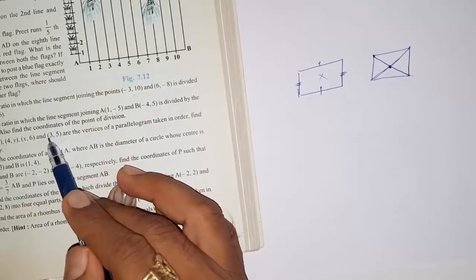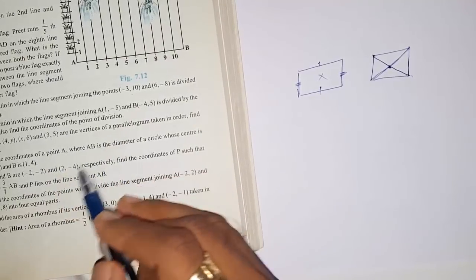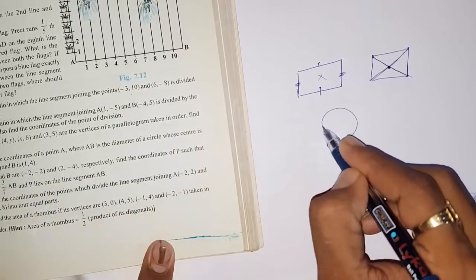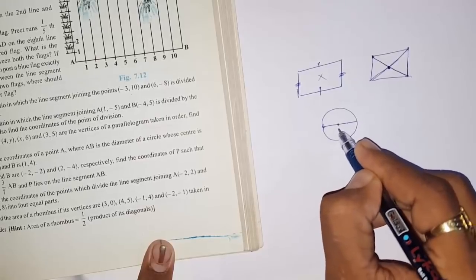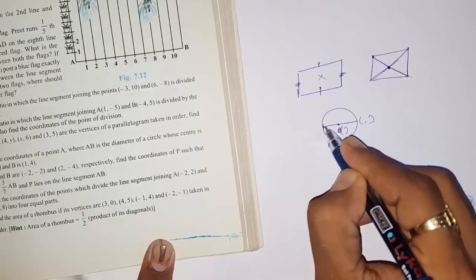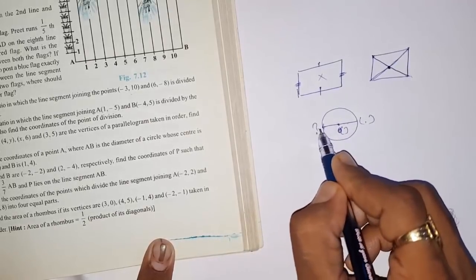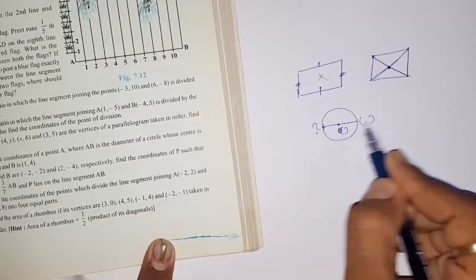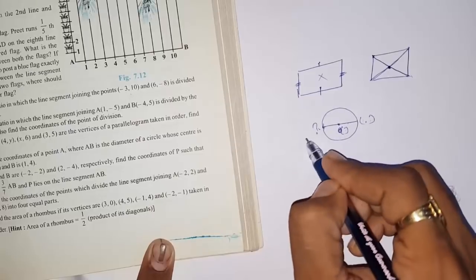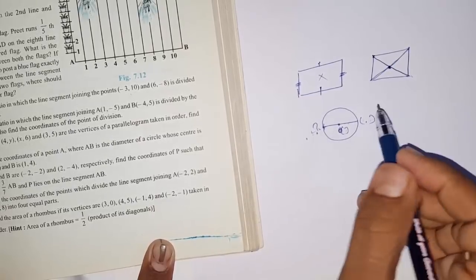Another important board examination question involves a circle: the center point is given as a coordinate, one end of the diameter is given as (x1, y1), and you need to find the other end. Since the center is the midpoint of the diameter, use the midpoint formula with the known endpoint and center to find the missing endpoint coordinates.